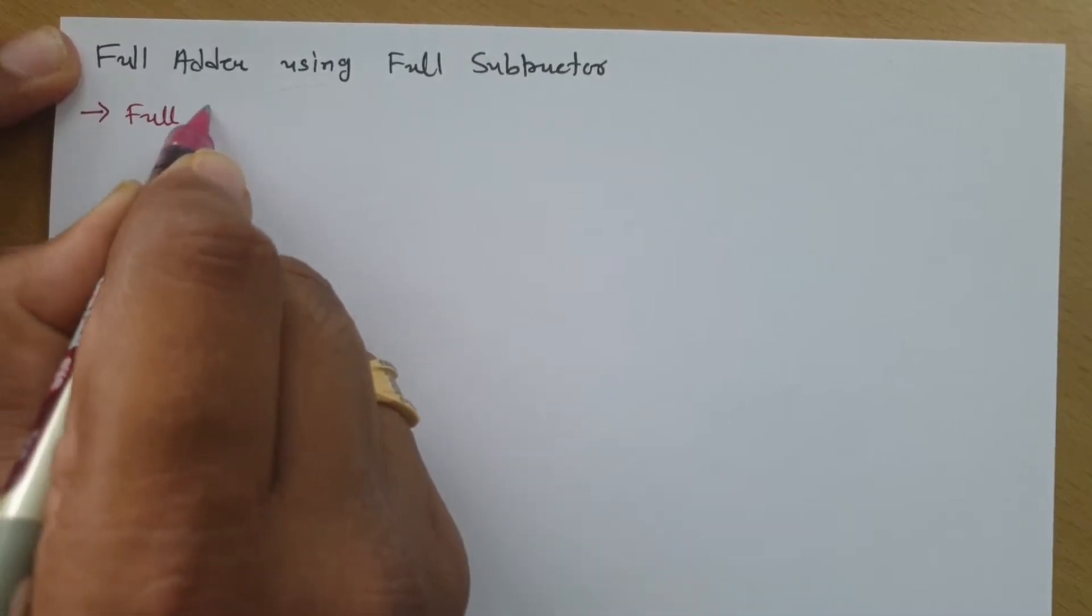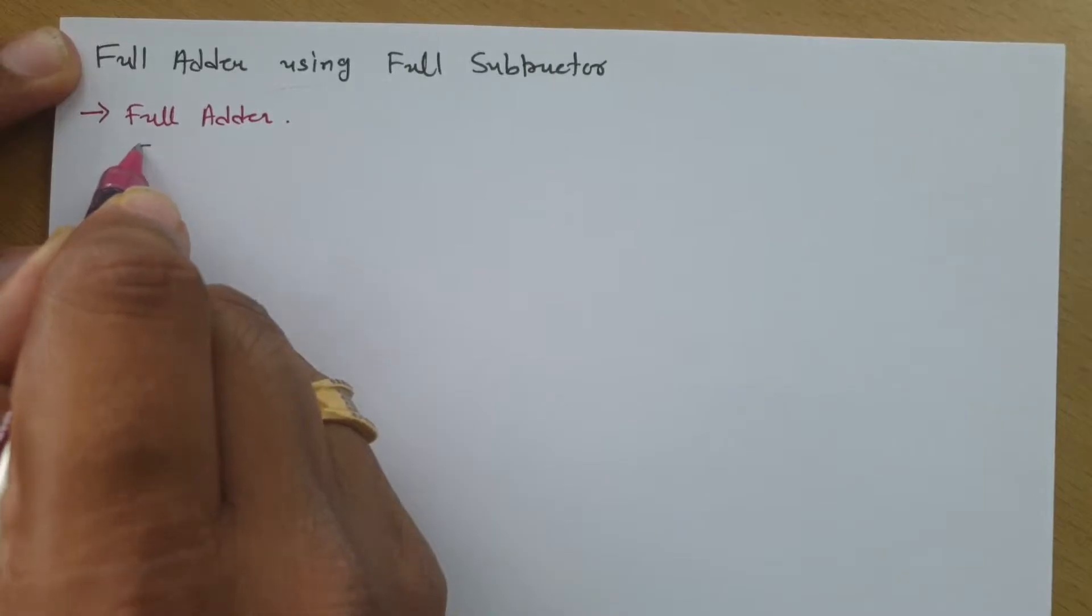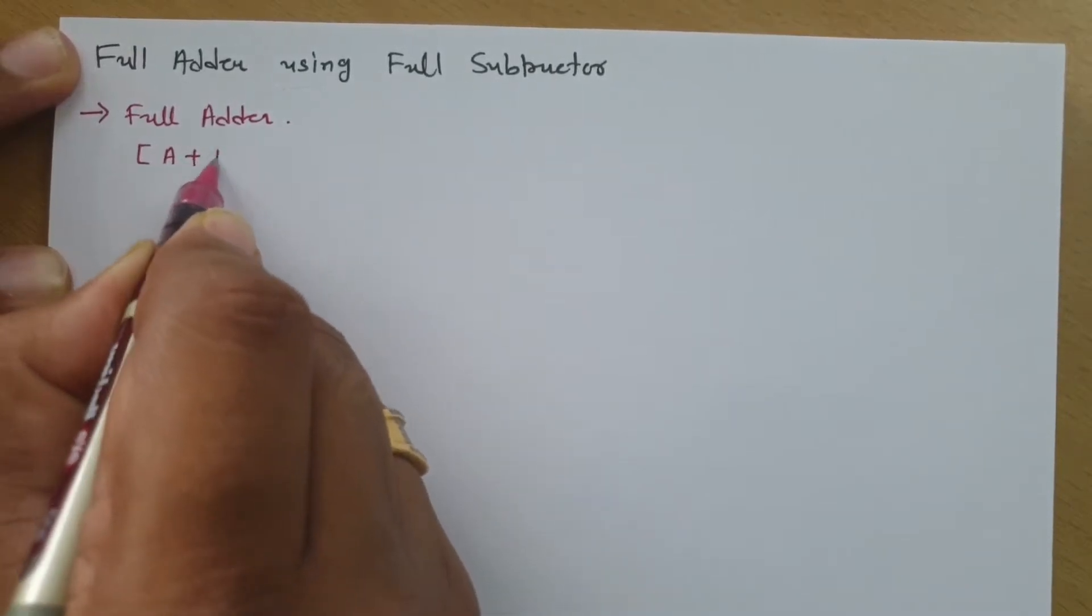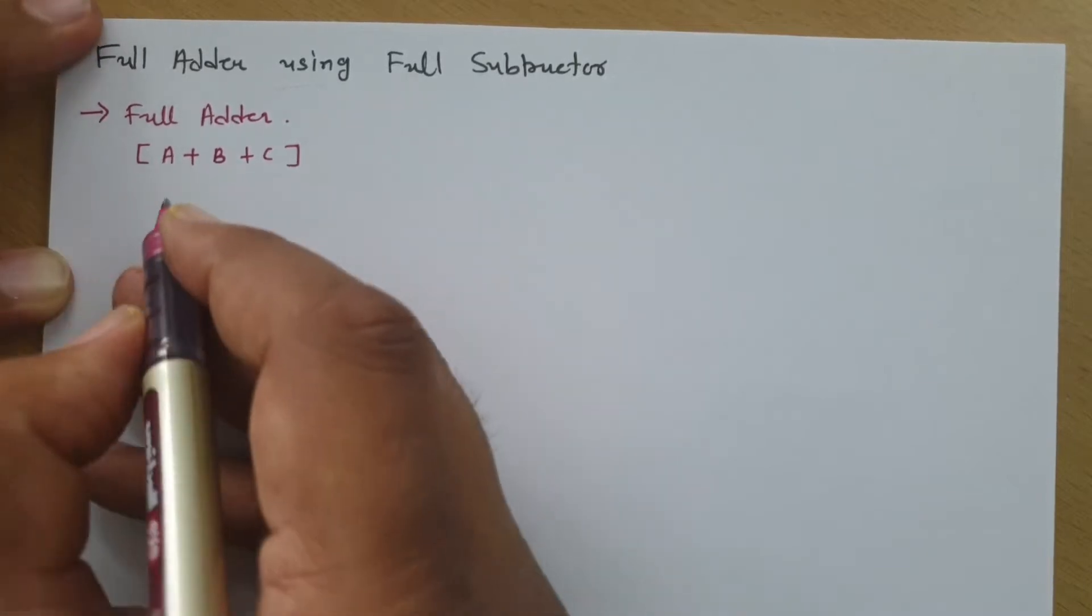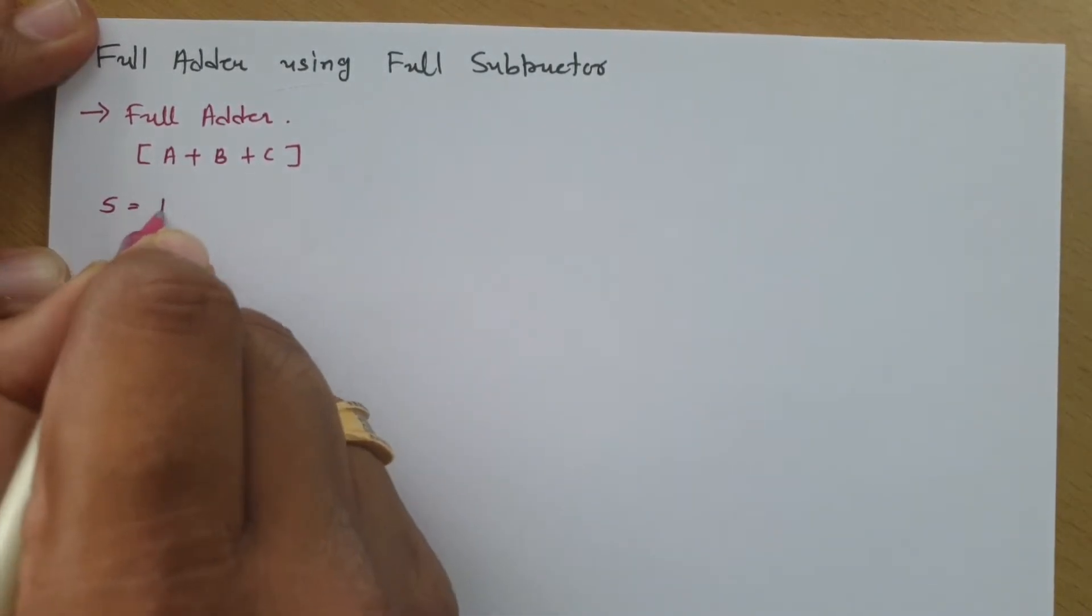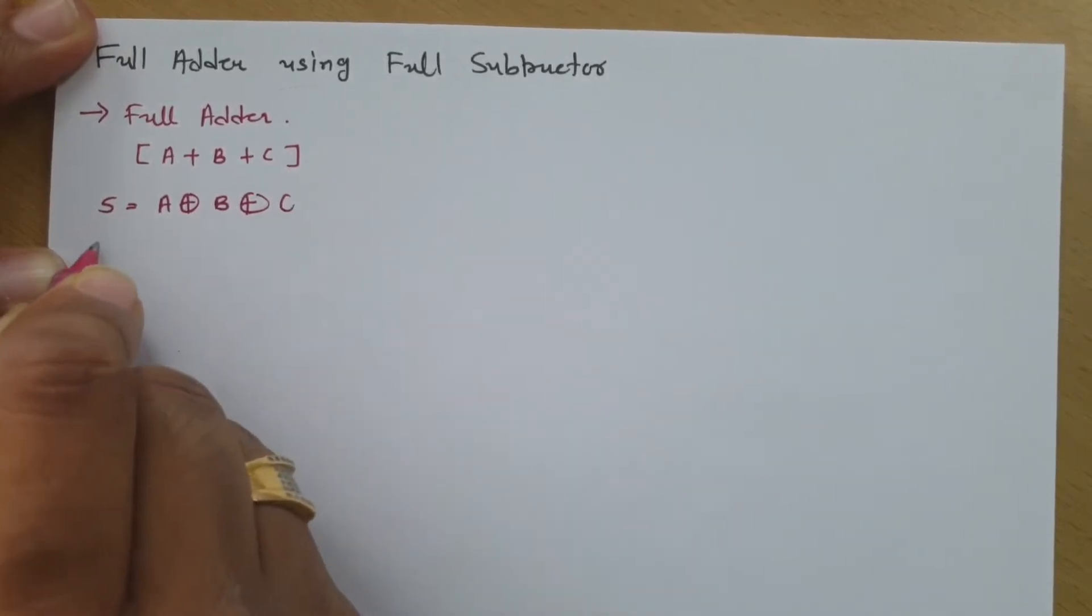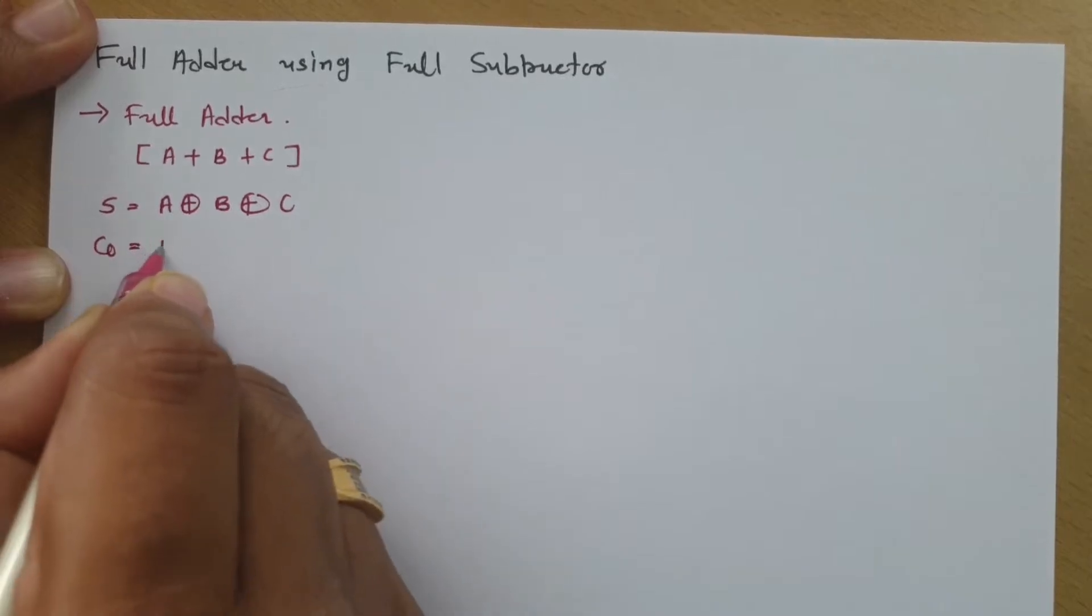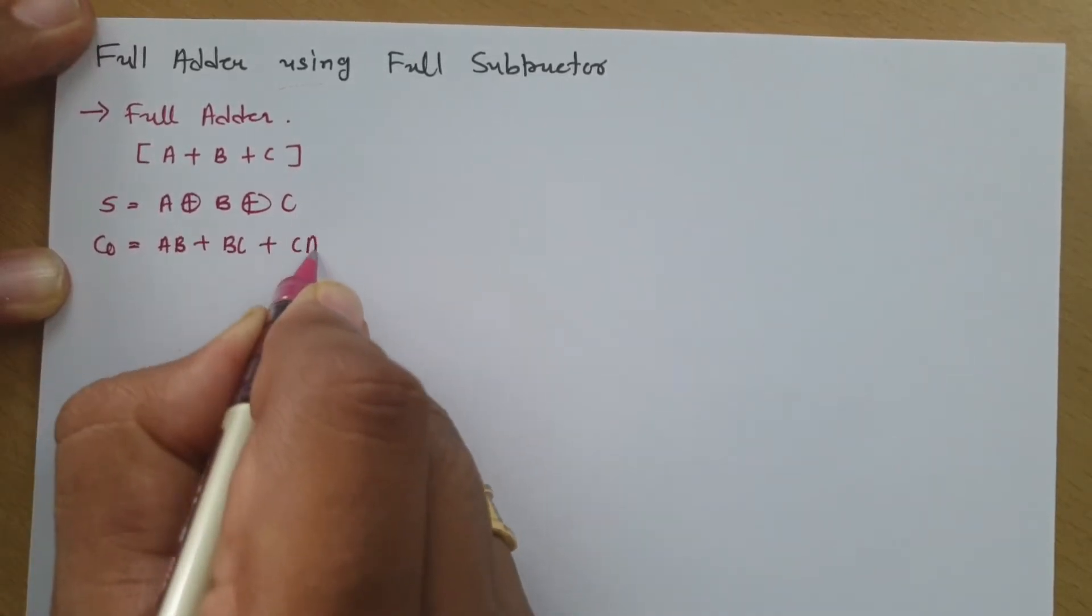Full adder is a 3-bit addition device. If I say I have bits A, B and C, then here by having full adder, we perform A plus B plus C. And in that, sum S that will be A XOR B XOR C and carry C0 that will be AB plus BC plus CA.